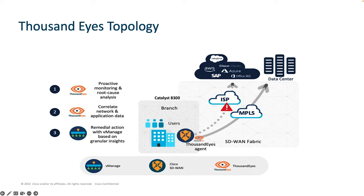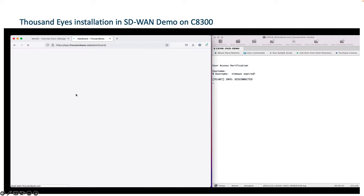Next we will go through a 10-minute demonstration of a successful ThousandEyes deployment using the Catalyst 8300 as the SD-WAN edge device. Before the demo, let's go over the topology. We have the Catalyst 8300 series platform on the branch side, part of the SD-WAN fabric, on which we will deploy the ThousandEyes enterprise agent using VManage. I have a ThousandEyes account where this Catalyst 8300 device will onboard to, and I have created two simulation tests for HTTP and HTTPS traffic towards Cisco Webex and Adobe. Now let me play the video.